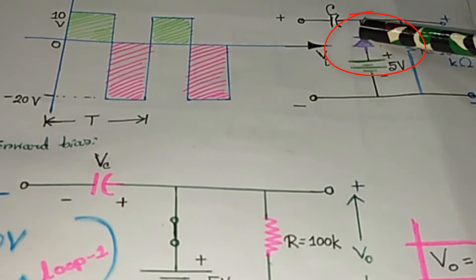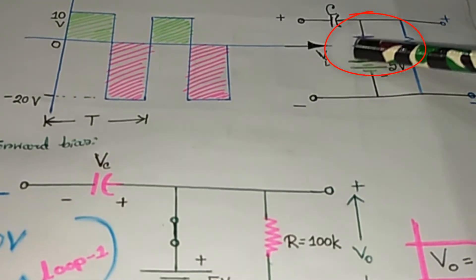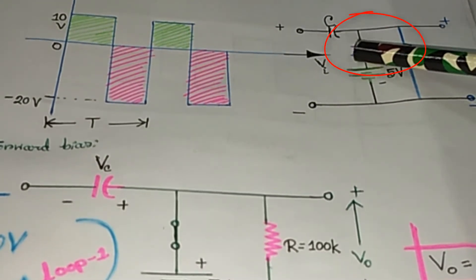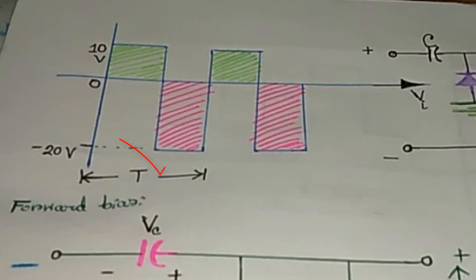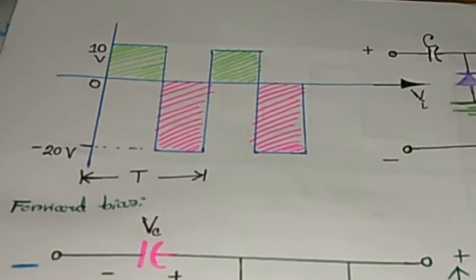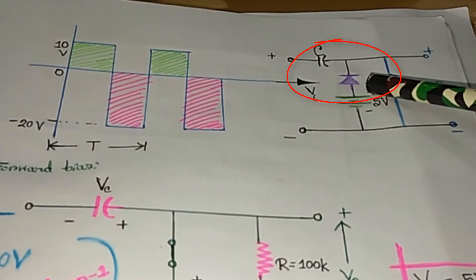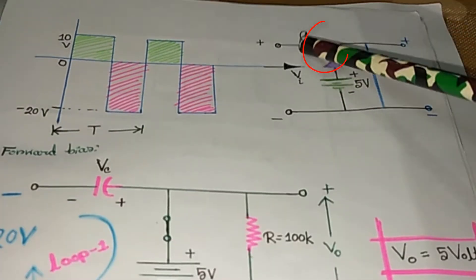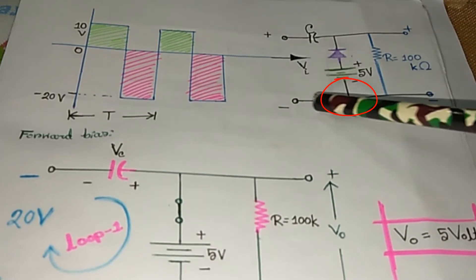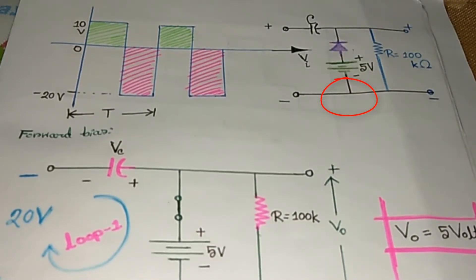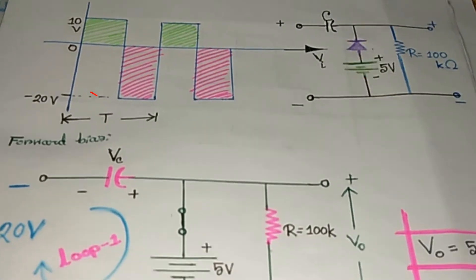...the terminal on the anode side of the diode is negative, and the terminal on the opposite side (cathode side) is positive. So if we apply negative 20 volts, the diode will be in forward bias because the negative terminal is entering at that terminal, and on the opposite terminal we have positive — so the diode will be forward biased.